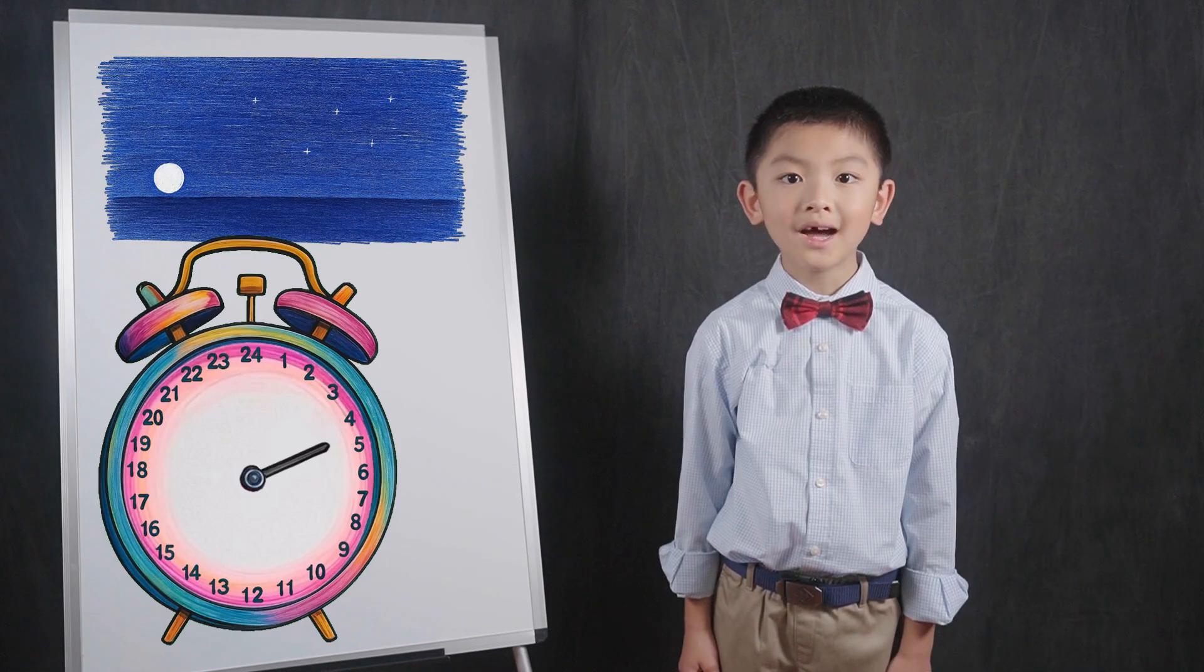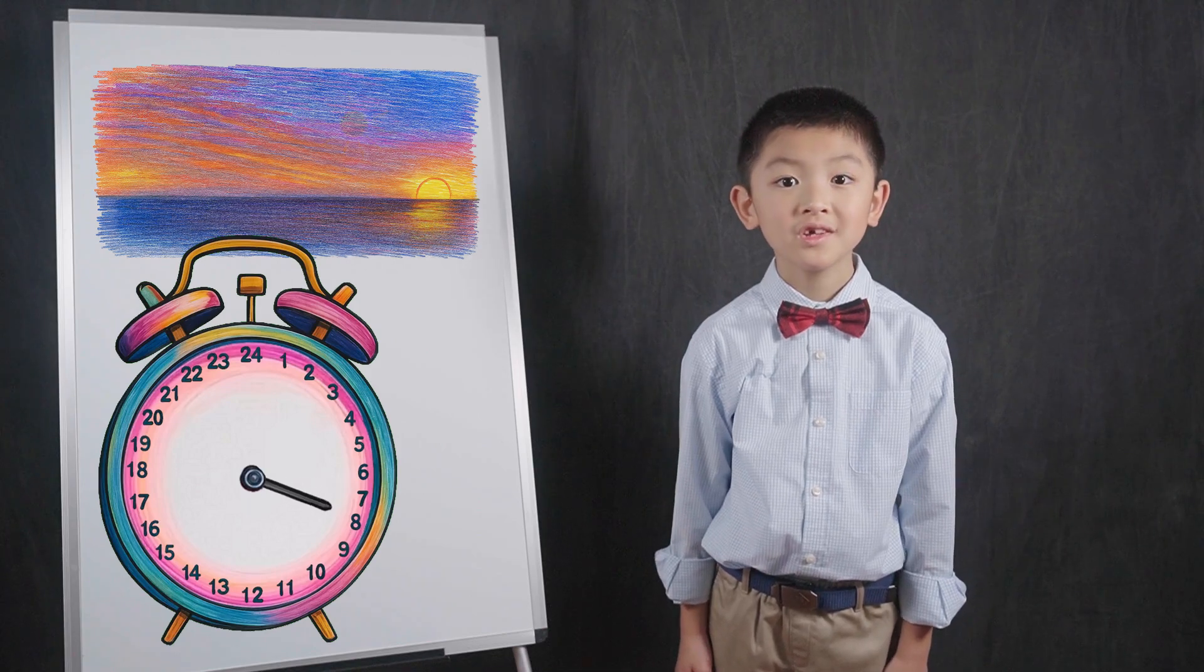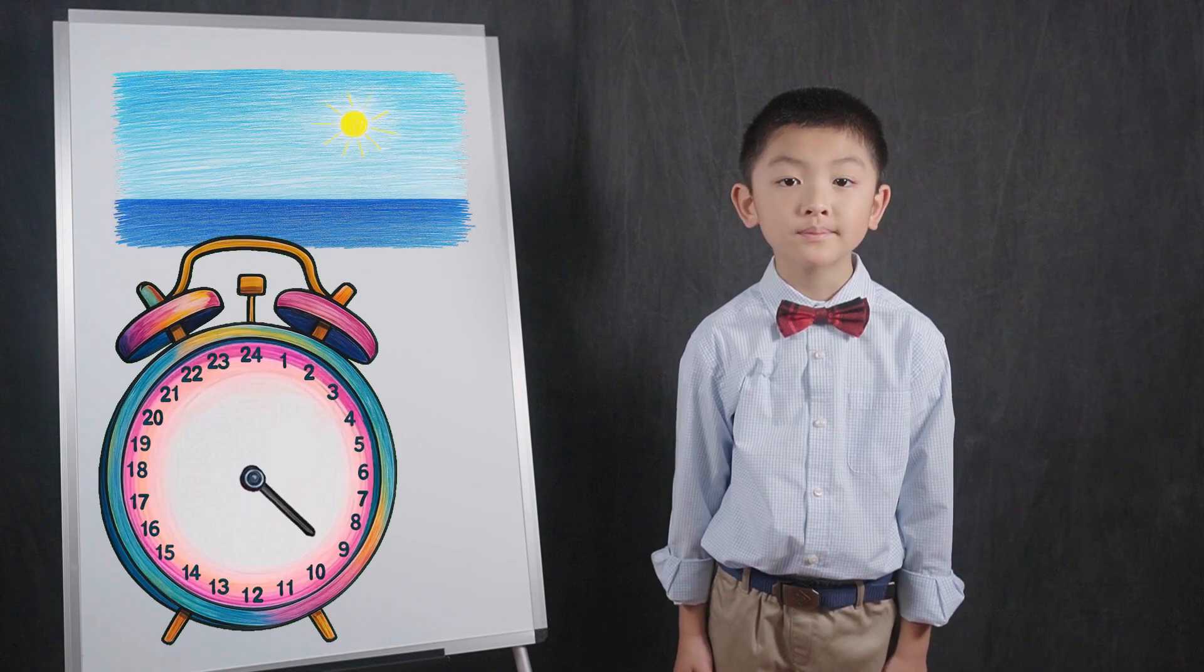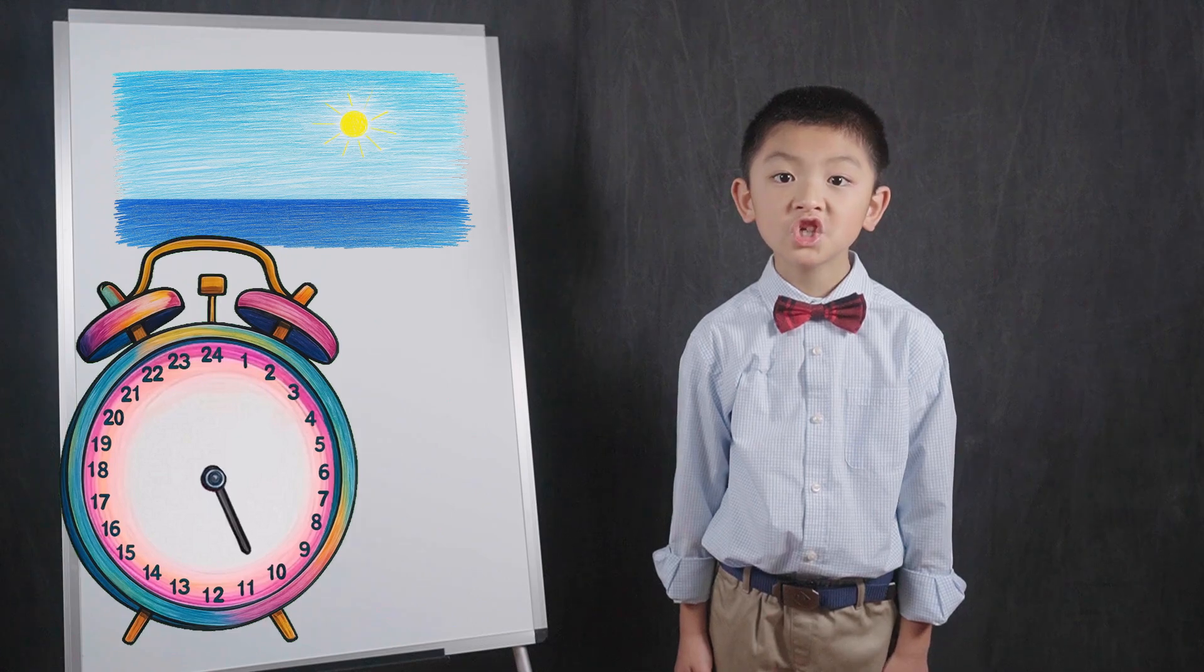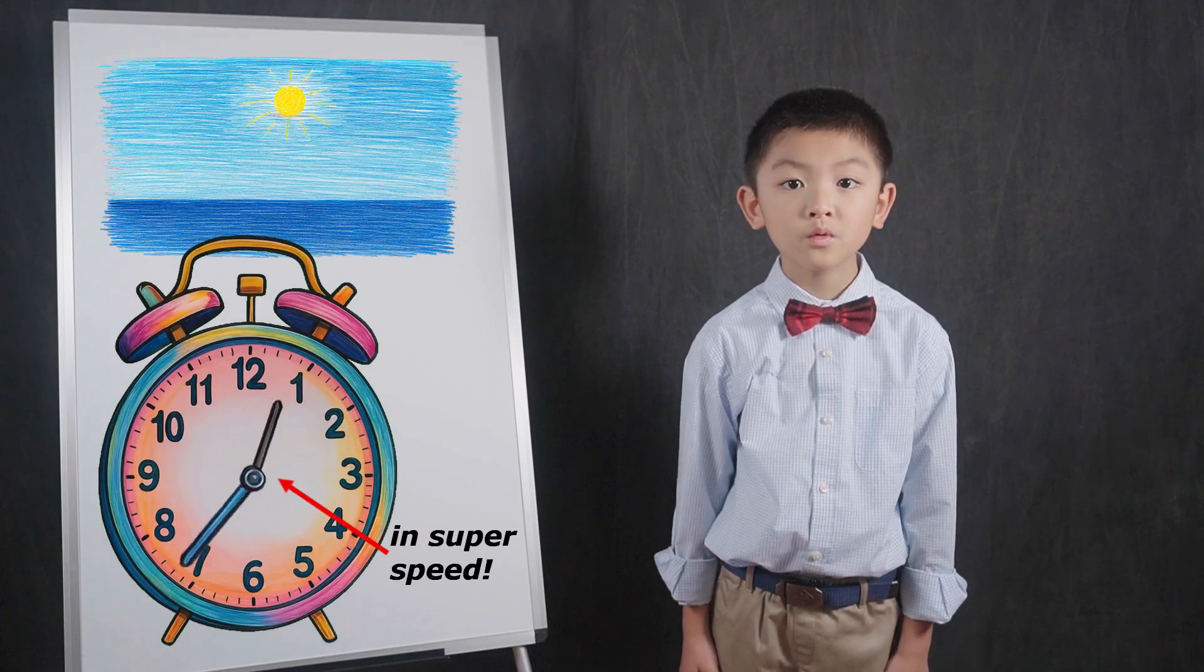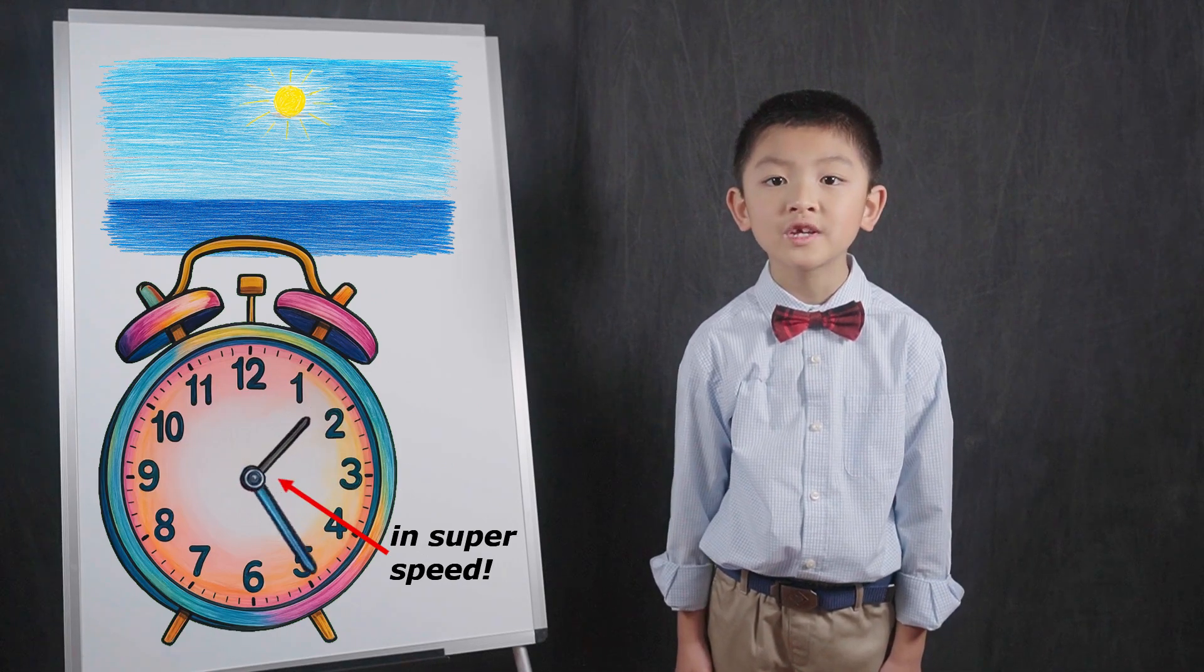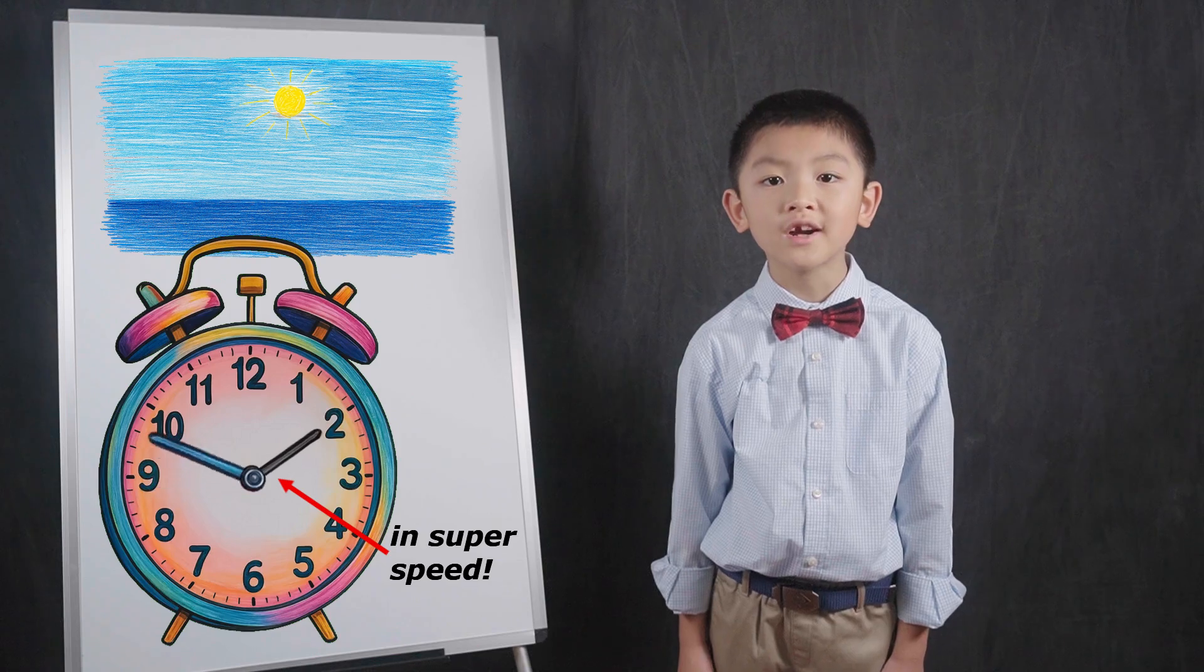As you probably know, most clocks do not display 24 hours. Clocks usually only display 12 hours. So let's switch to one now and see how it works. We will discuss why clocks typically only have 12 hours instead of 24 in our next video.